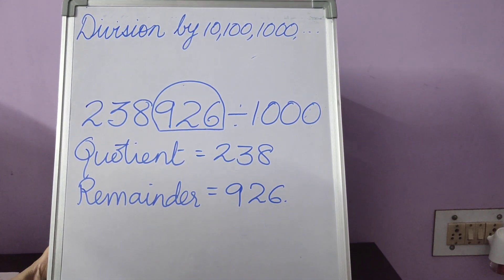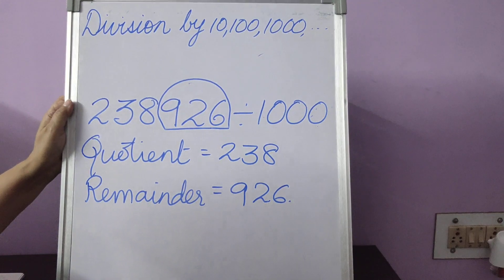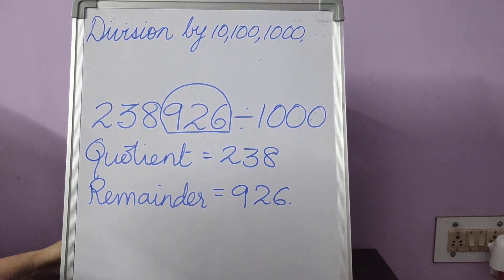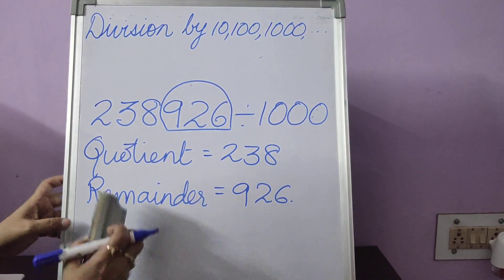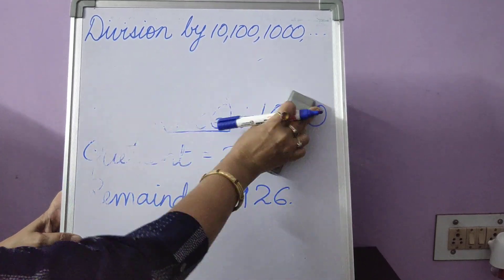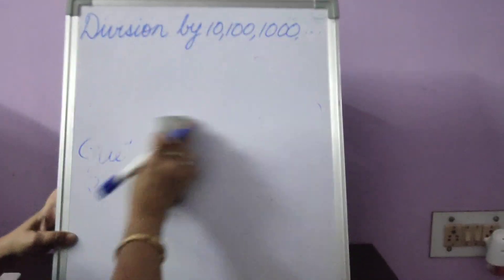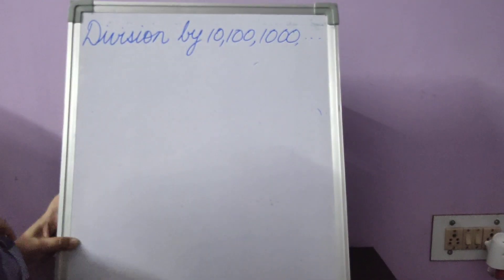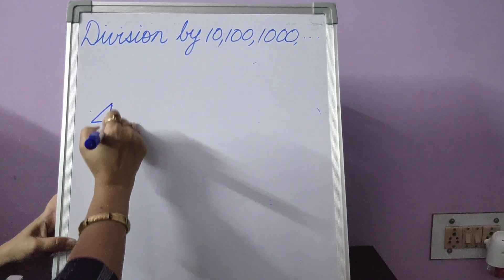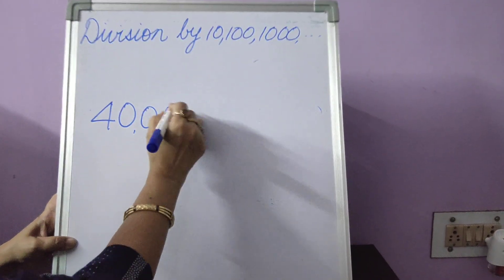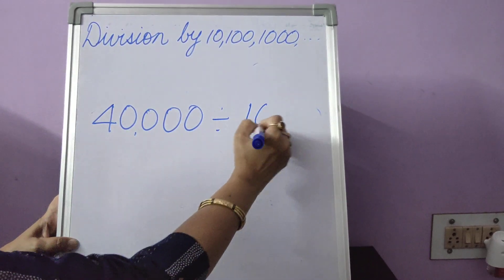And this is exactly the way you are going to do it even in your notebook. One more example, let's see in which we will take lots and lots of zeros. The method remains the same. There will be absolutely no difference.